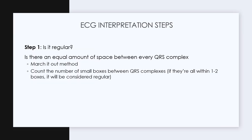There are five steps to interpreting an ECG. Step one: is the rhythm regular? Does it look like there is an equal amount of space between every QRS complex? We can use the march-out method — take calipers or a ruler and measure QRS complexes next to each other. A more accurate method is counting the number of small boxes between each QRS complex; if they're all within one to two boxes of each other, it's considered regular.